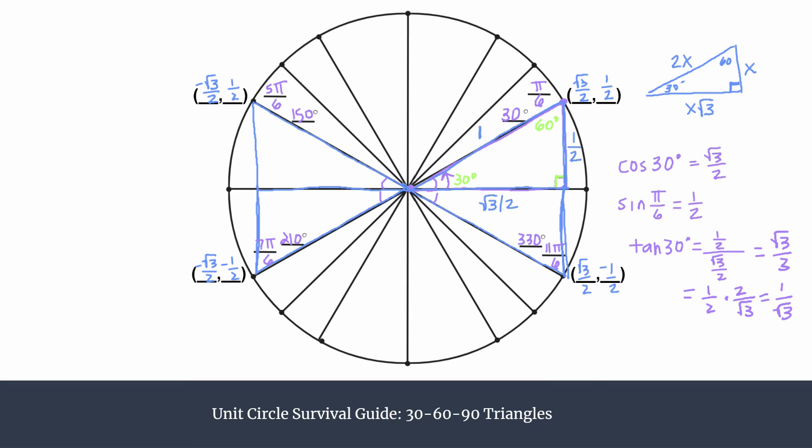All right. So that was a review of 30, 60, 90 triangles and how we use them in the unit circle. Definitely check out some of the other videos on the unit circle survival guide. I'll have videos on the other special right triangles, how to label a unit circle in degrees and radians, how to label the full unit circle and so much more.